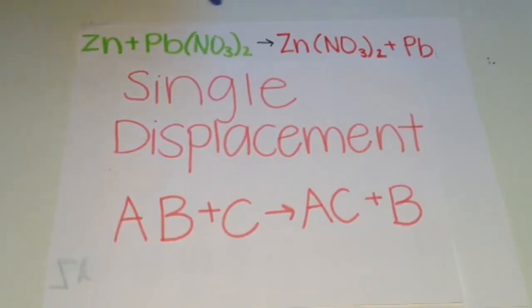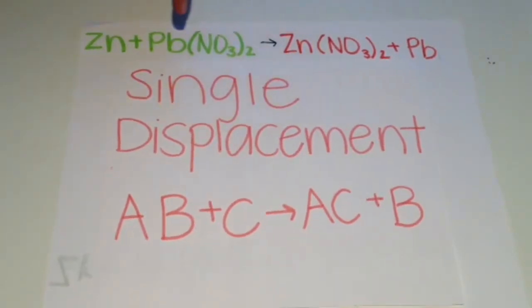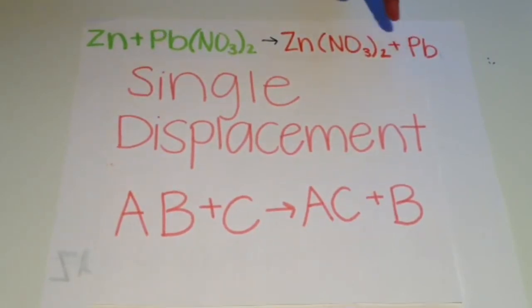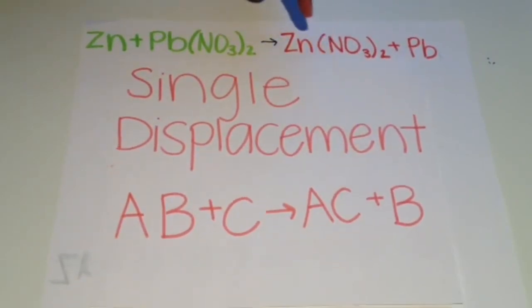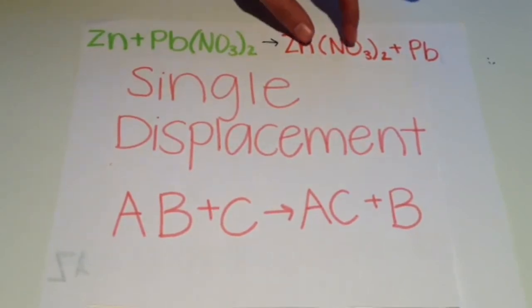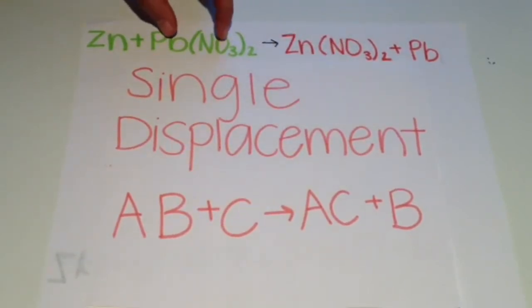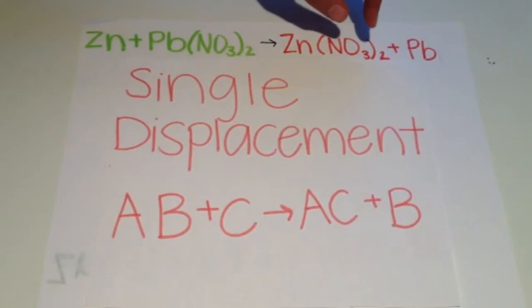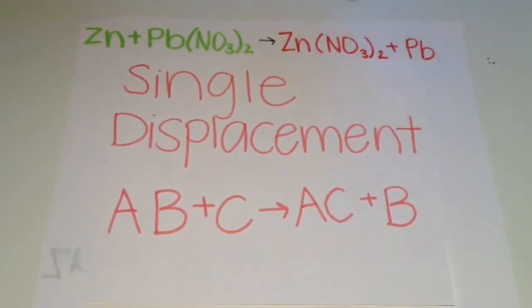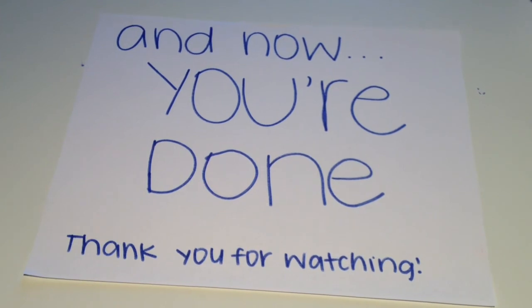If you're comparing the single displacement equation with ours, you'll notice that Zn is the C, A is the lead, and B is the nitrate. Notice how nitrate always pairs up with another atom and leaves one by itself. And now you're done. Thanks for watching.